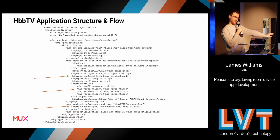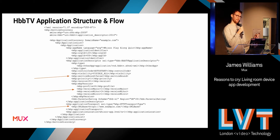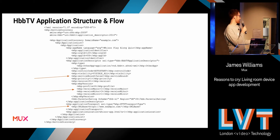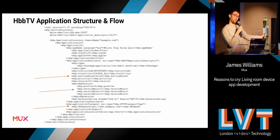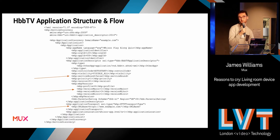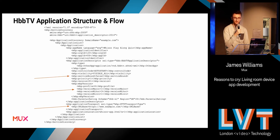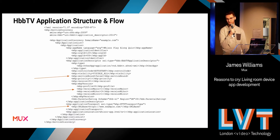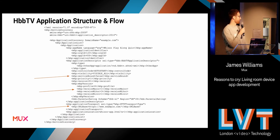The second important element is version information — that's supposed to control which specification the HbbTV device is and where the app will actually run. So if you've got an HbbTV device that's version 1.2.1, and it gets an AIT which says this app is only suitable for 1.3.1 and above, in theory it shouldn't try and run the app. Nine times out of ten it will try anyway, and then you're in a whole world of pain. The final thing at the bottom is just the launch URL — a path to a website or a DSM-CC carousel.